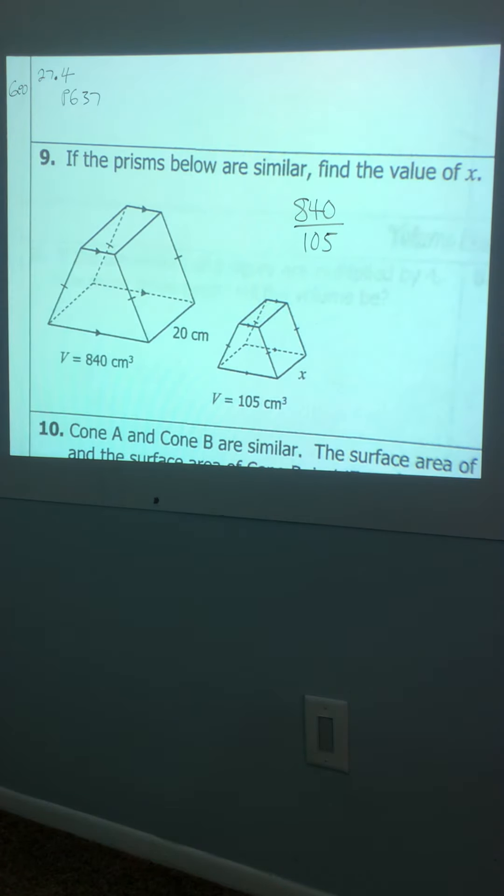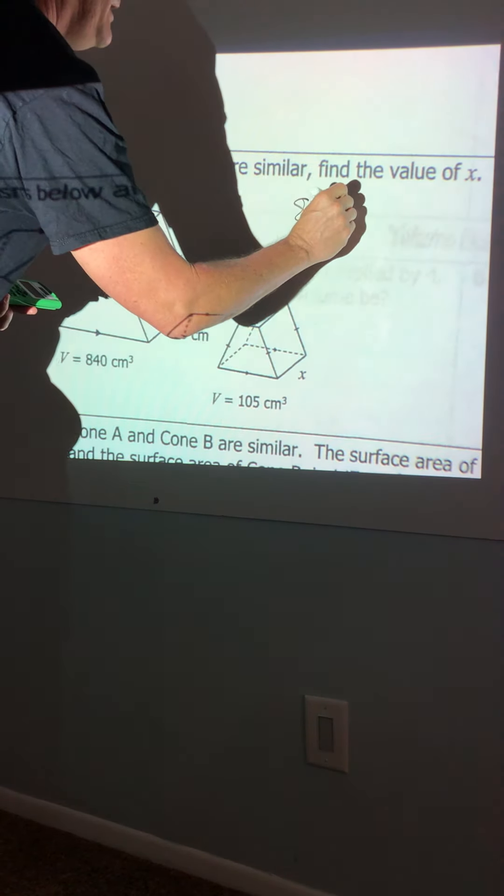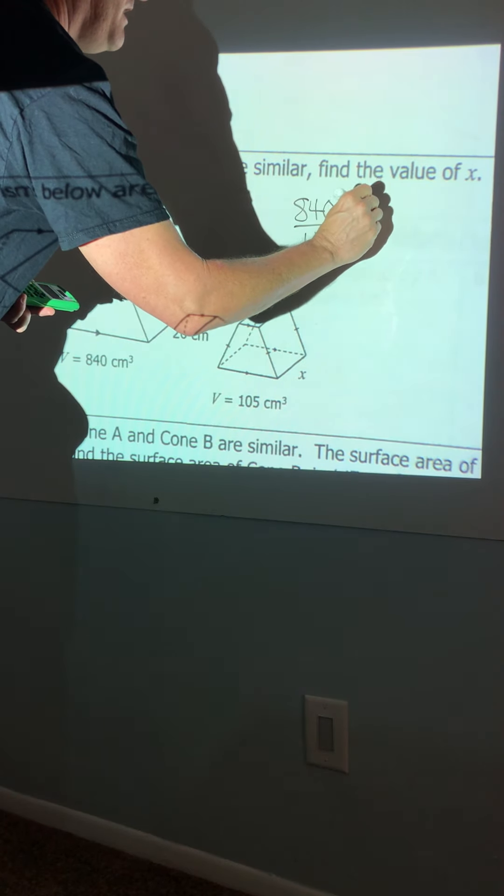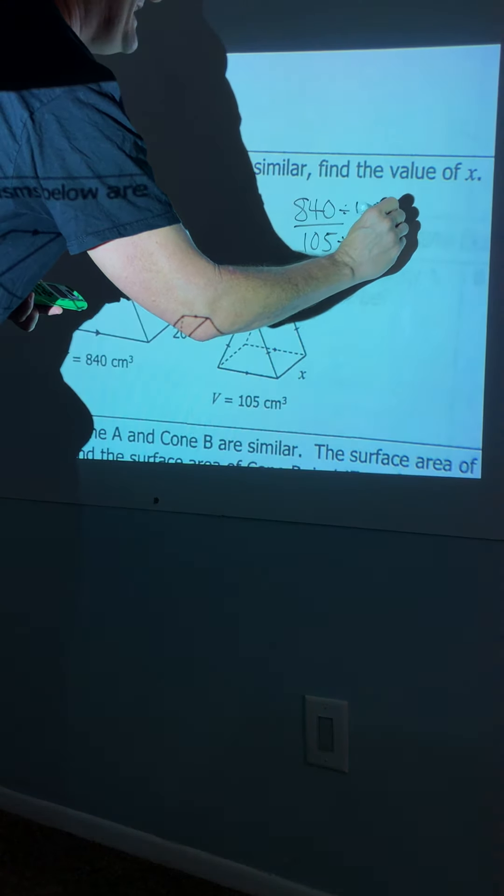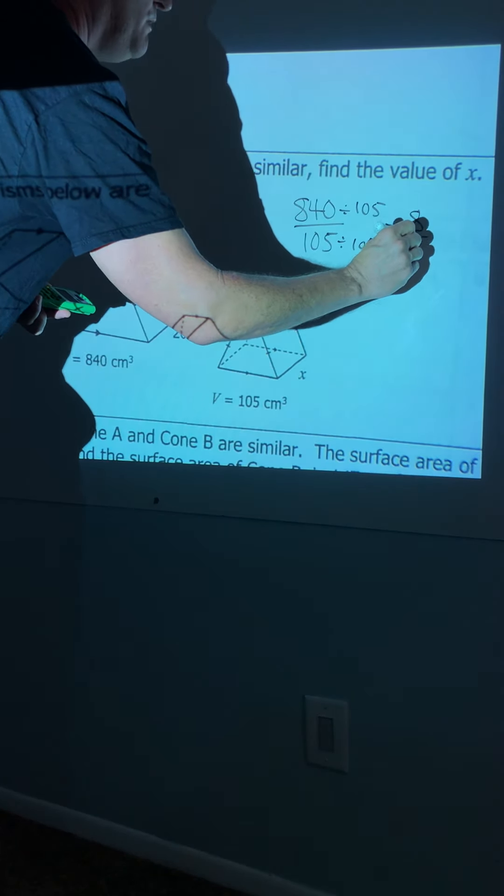And then I need you guys to reduce that. I know five will go into both, but I'm really sensing something bigger. How about, let's see if 105 will go into 840. Yep, eight times. So you're going to divide by 105 and you're going to get an eight to one ratio.